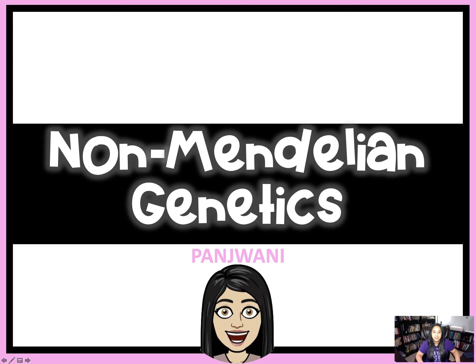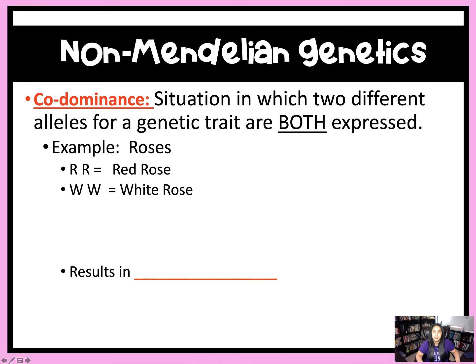Alright, let's go ahead and jump into the notes. So the first type of non-Mendelian genetics that we will talk about is codominance. This is a situation in which two different alleles for a trait are both expressed.